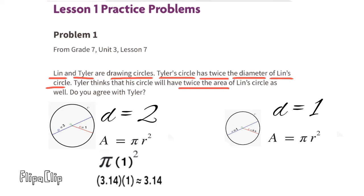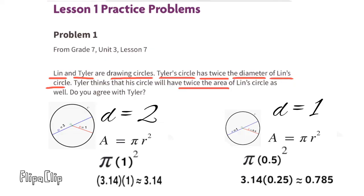Lynn's circle has a diameter of one unit, so the radius is 0.5 units. Pi times 0.5 squared: 0.5 times 0.5 equals 0.25. So 3.14 times 0.25 equals approximately 0.785. The area of Lynn's circle is approximately 0.785 units squared.